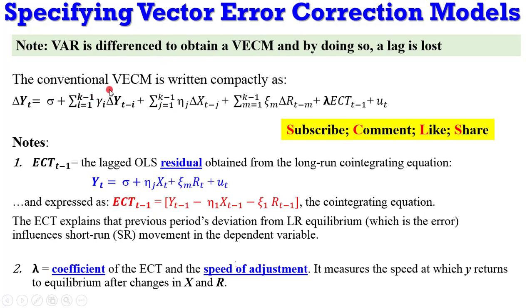The ECT is simply the lagged OLS residual obtained from the mathematical computation of the long-run equation. After you estimate the long-run model, you extract the residual; once you lag it, it becomes the co-integrating equation. The error correction term explains the previous period's deviation from the long-run equilibrium — which is the error — and such error influences the short-run movement in the dependent variable.